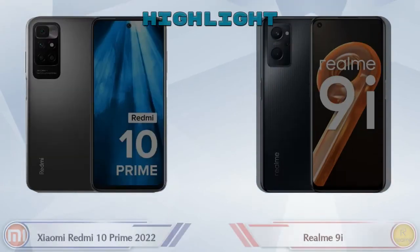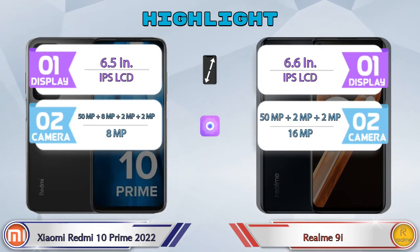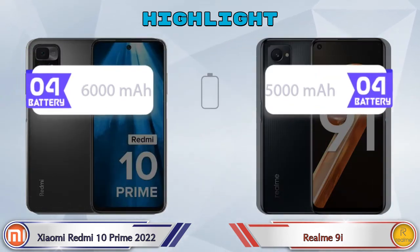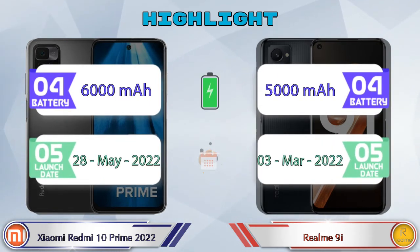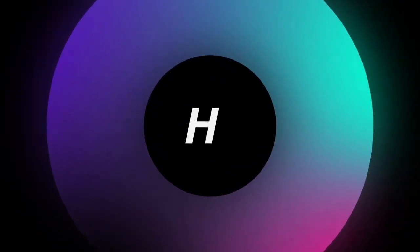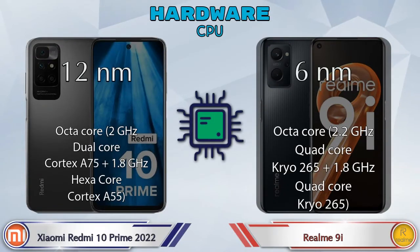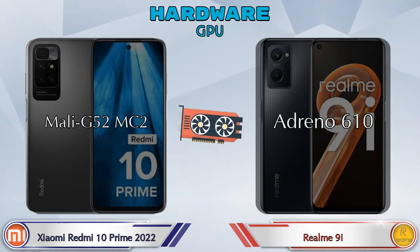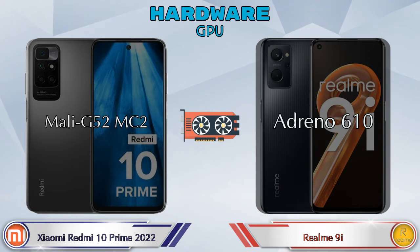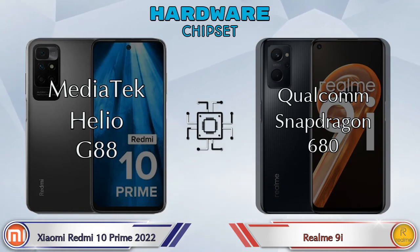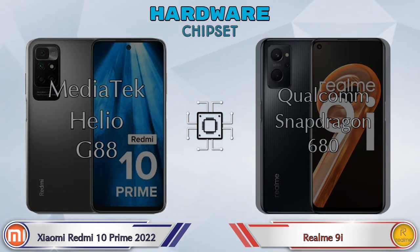Let's talk about the highlights of both phones, then we'll do a deep comparison. Starting with the most important hardware: the Redmi 10 Prime 2022 has the MediaTek Helio G88 chipset with Mali G52 MC2 GPU, while the Realme 9i has the Qualcomm Snapdragon 680 chipset with Adreno 610 GPU.